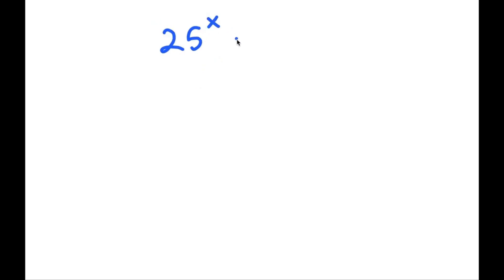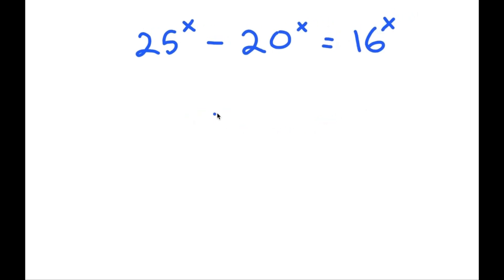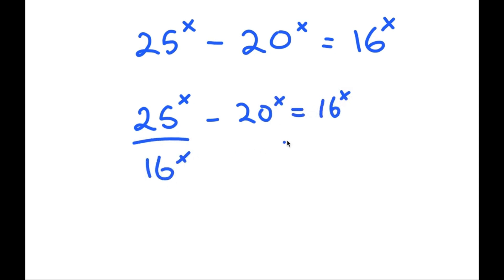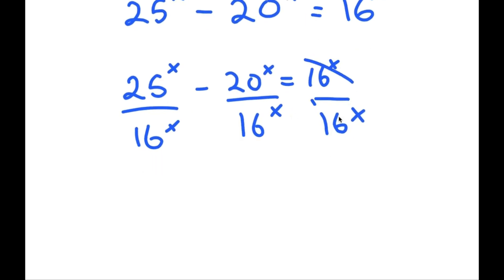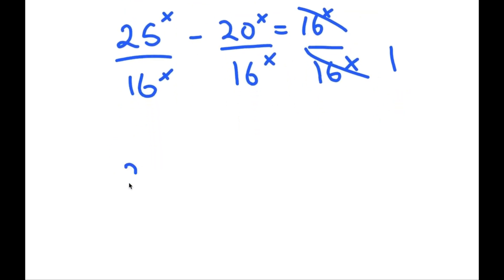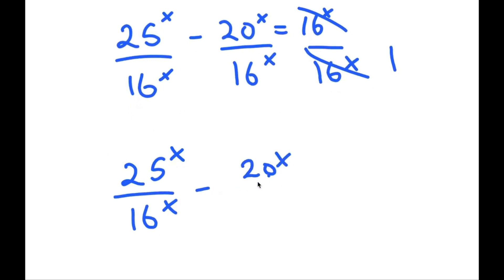In this video, I'm going to be solving the equation 25 to the power of x minus 20 to the power of x is equal to 16 to the power of x. To solve this, I'm going to first start by dividing every term by 16 to the power of x. These two cancel out on the right-hand side, so I'm left with 25^x over 16^x minus 20^x over 16^x is equal to 1.